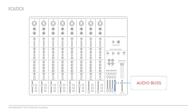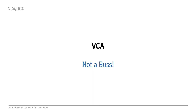This is different than a subgroup. When you assign channels to a subgroup, it's actually sending the signal through an output bus, which can then be routed to the main mix or sent right out of the console. You can also insert things like EQ and compression on a subgroup because it's a real audio path. VCAs are not an audio bus — you can't route them anywhere and you can't insert anything on them.